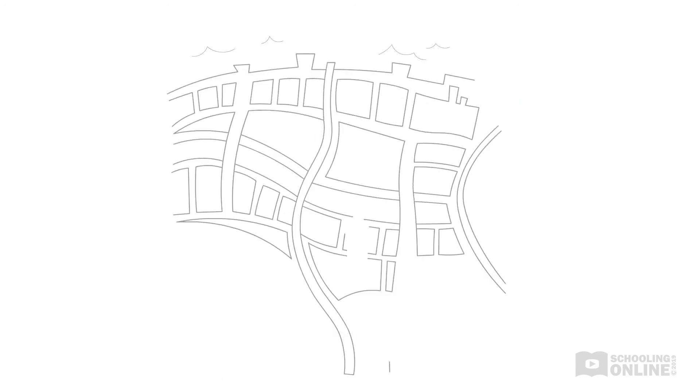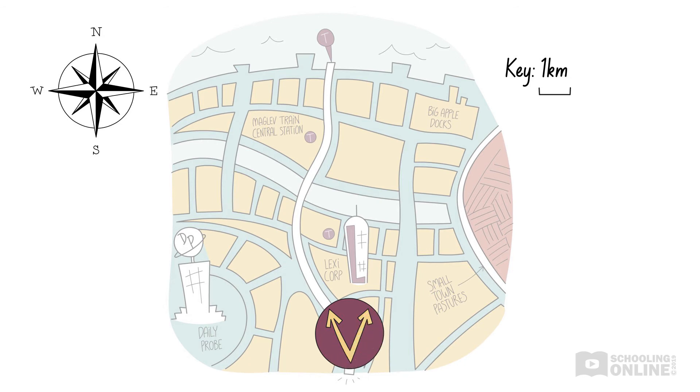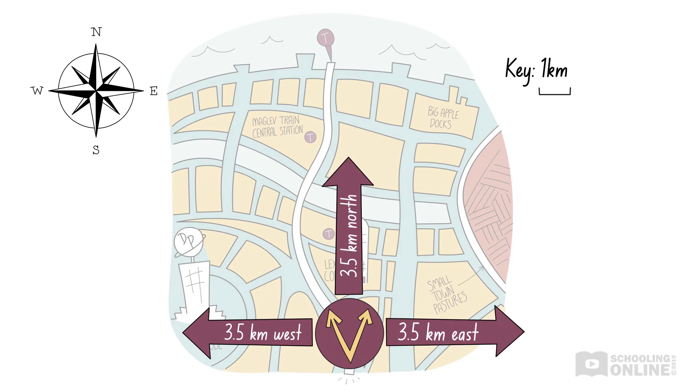The countdown timer on his watch starts beeping, signalling to Vector Man that it's time to return to his office. Looking at a map, he determines that he needs to travel 3.5 kilometres. Just like before, let's add a direction to this quantity and see what happens. We can tell from the map that his office is 3.5 kilometres west of his current location. If he was to travel east or north, he would end up at the wrong spot. Therefore, Vector Man needs to travel in a particular direction. In this case, he needs to travel west.